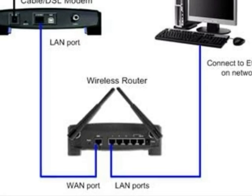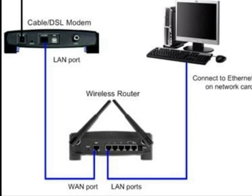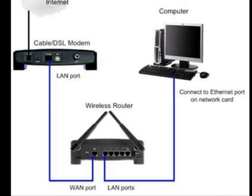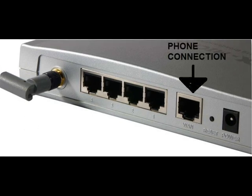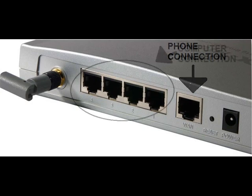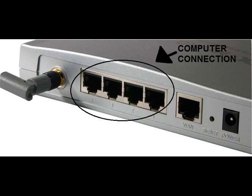A Router has two important parts: phone connection and WiFi connection. At the back of the router we can see the principal port, a mini antenna for wireless connection, the phone connection where we put the ADSL cable, and the connection to the computer. A high-tech router can have a lot of computer connections.